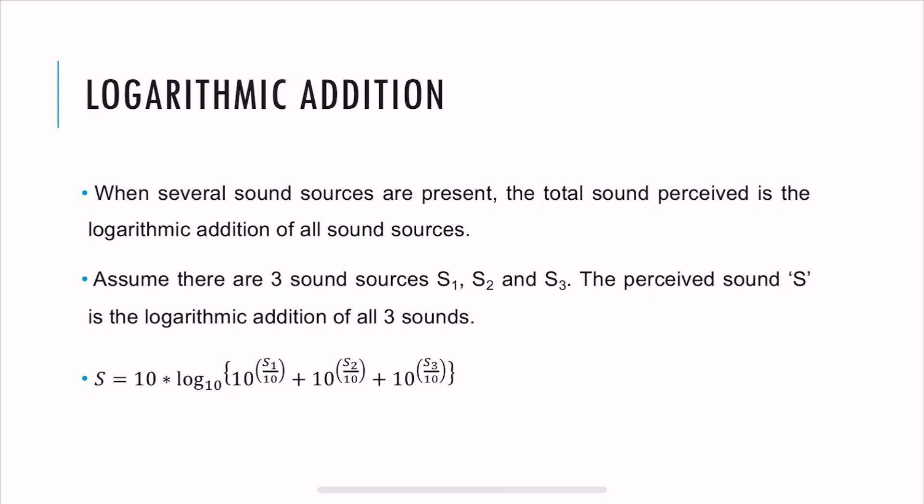Let's say there are three sound sources: S1, S2, and S3. When you're subjected to three sound sources, you're going to perceive a single sound, which is the logarithmic addition of all three sounds. It follows an equation where you add the sound sources logarithmically. You can check the link in the description below to learn more about logarithmic addition.